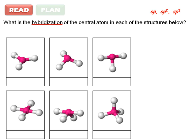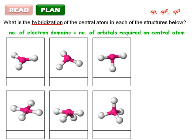To plan your answer, consider the relationship between the number of electron domains and number of hybridized orbitals on the atom. They must, of course, be the same.